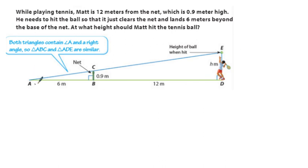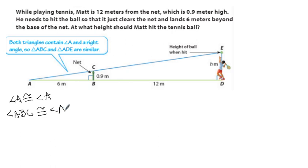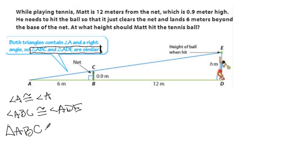Both triangles contain angle A. Since angle ABC is a right angle and angle ADE is also a right angle, they are congruent. So angle ABC is congruent to angle ADE. Now that I've proven two congruent angles, I've proven that triangle ABC is similar to triangle ADE. The angles that are congruent should be together — A and A go first, then B and D in the middle.